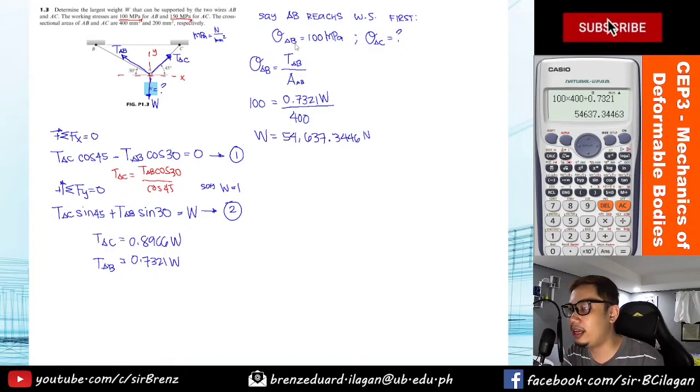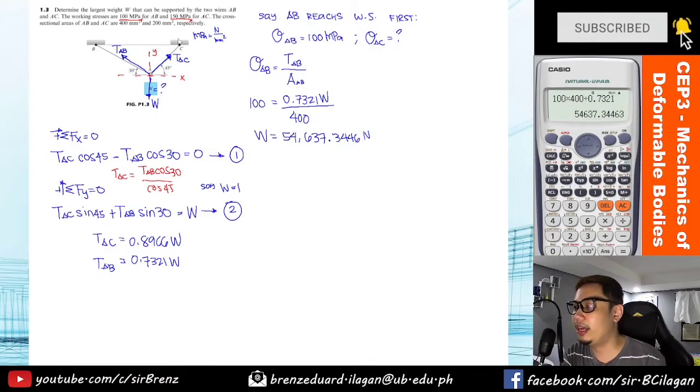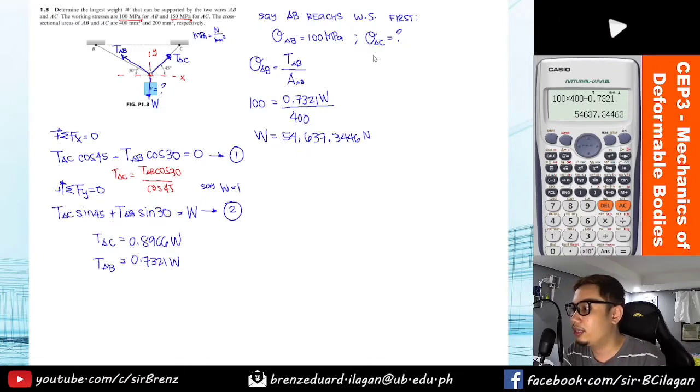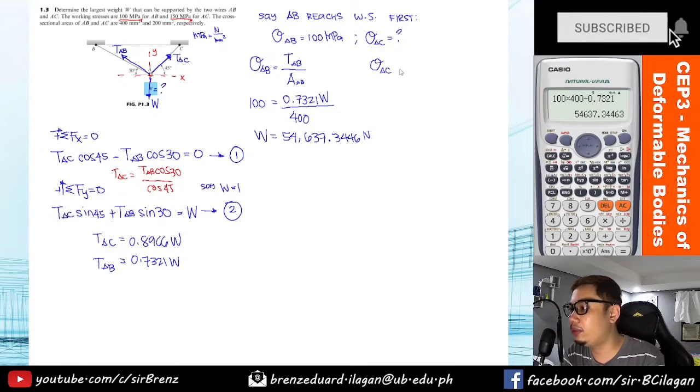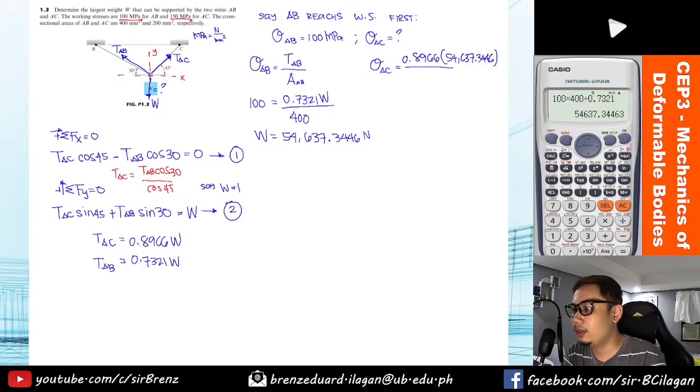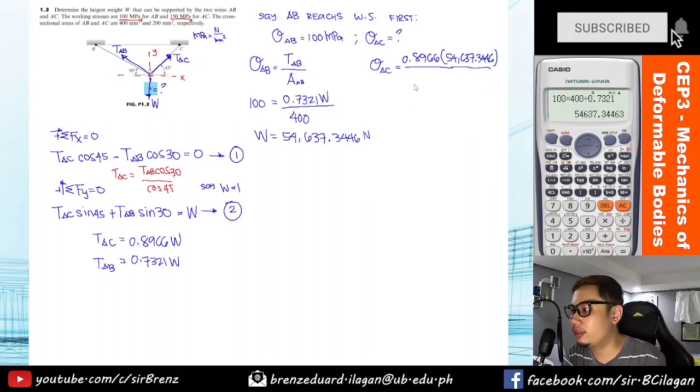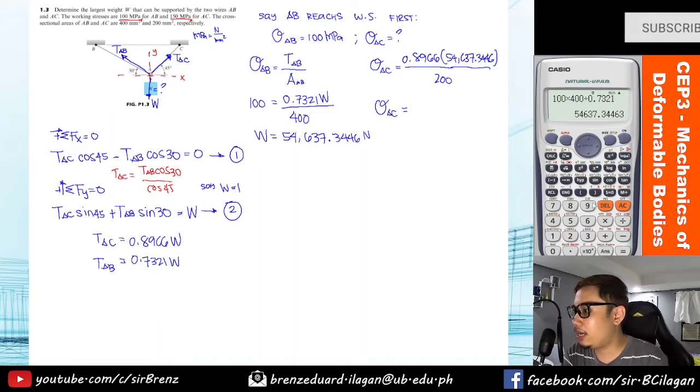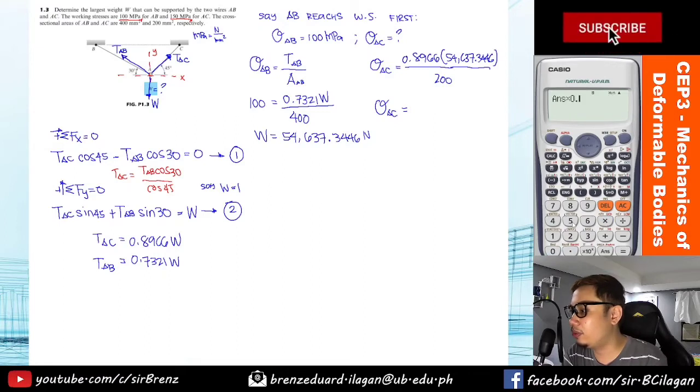What if AC reaches 150 megapascals first? So let's check this. Since we have weight of 54,637, we will substitute that and check what will be the stress in AC. So stress in AC, just get the value of TAC in terms of W. That is 0.8966 times W, so times 54,637.3446 Newtons, divided by the area which equals 200 mm squared. So what will be the value of stress AC?